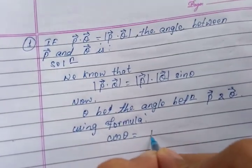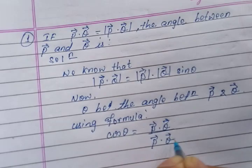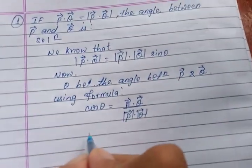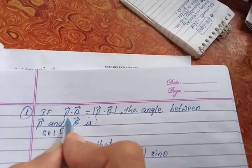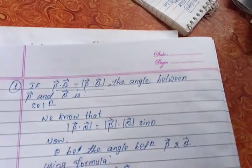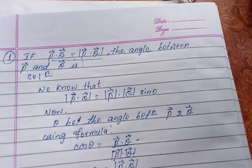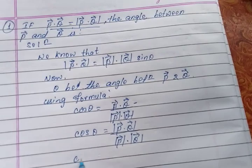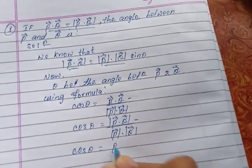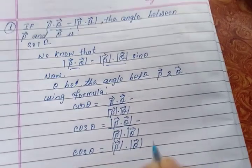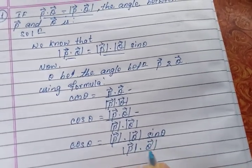Using the formula, cos theta is equal to p-vector dot q-vector divided by p-vector modulus dot q-vector modulus. Since p-vector dot q-vector is given as p-vector cross q-vector modulus, we substitute: cos theta is equal to p-vector dot q-vector sin theta divided by p-vector dot q-vector.